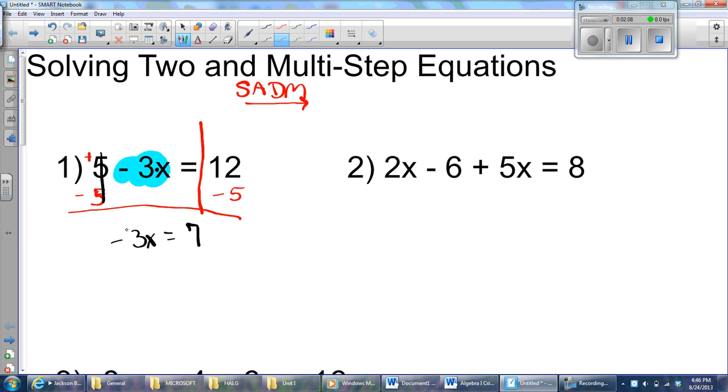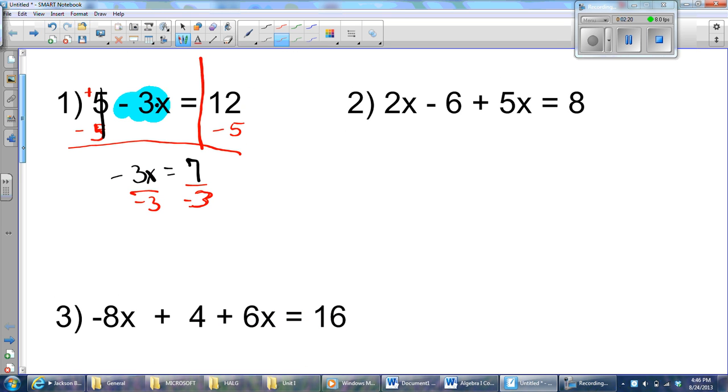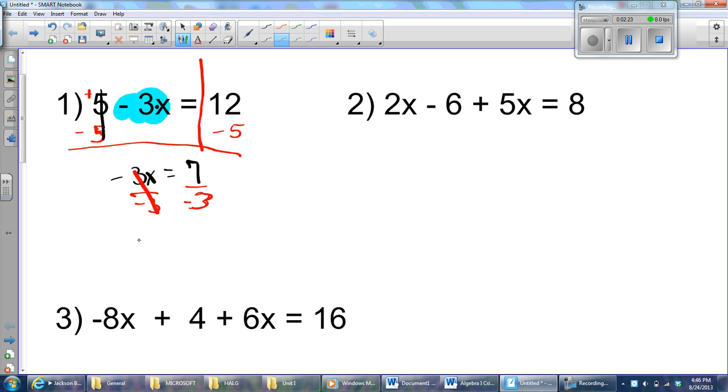So now I end up with negative 3x equaling 7. Well, now to get x alone, I'm going to divide by negative 3 on both sides. All right. So these negative 3s will cancel. I'll end up with x equals negative 7 thirds.